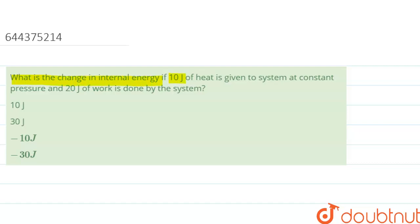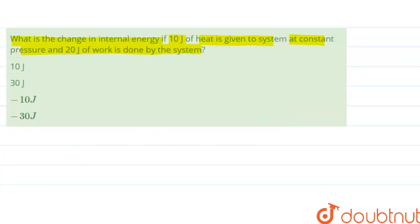In this question, we are given: what is the change in internal energy if 10 joules of heat is given to the system at constant pressure and 20 joules of work is done by the system? Heat is given to the system means the system has absorbed heat, so the sign of heat is positive. Therefore, q = +10 joules.